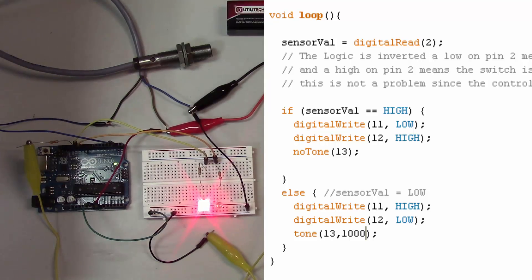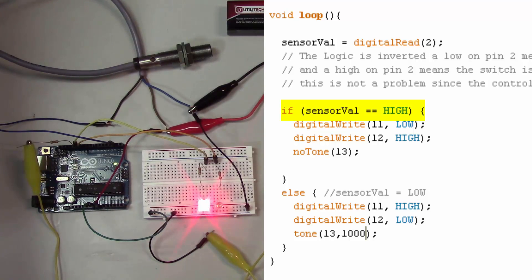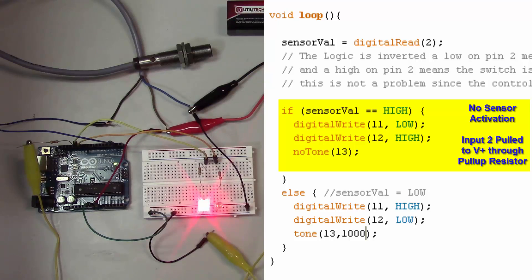So once we've got our output set up then as far as the rest of the program goes in our loop we basically set up an if statement and for that if statement we're checking to see if the input's high. The input's going to be high if we don't have any sensor activation because the sensor when it's activated pulls the output to ground so if we don't have that happening we're not pulling the signal to ground that means it's going to be positive 5 volts which is high.